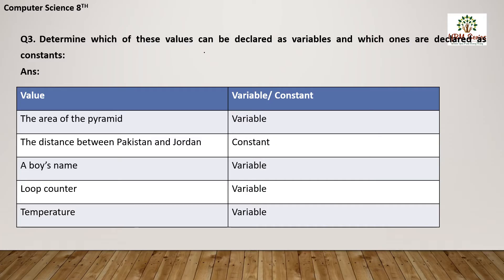The distance between Pakistan and Jordan — this distance is constant, it is fixed and does not change. Therefore, that is a constant. A person's name can be a variable — it can be anything: Ali, Ahmad, Faisal, etc. A loop counter is also a variable.